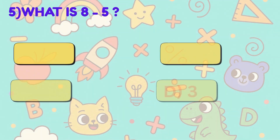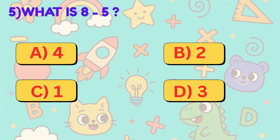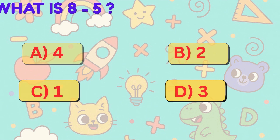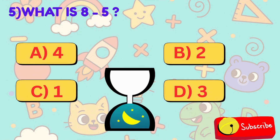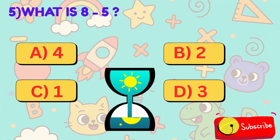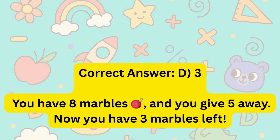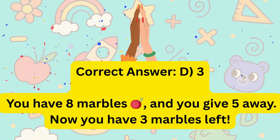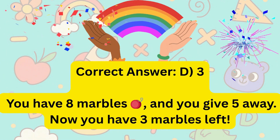5. What is 8 minus 5? Is it A, 4, B, 2, C, 1, or D, 3? Correct answer is D, 3.